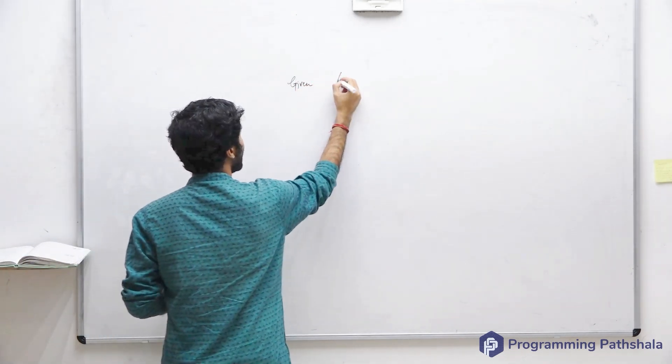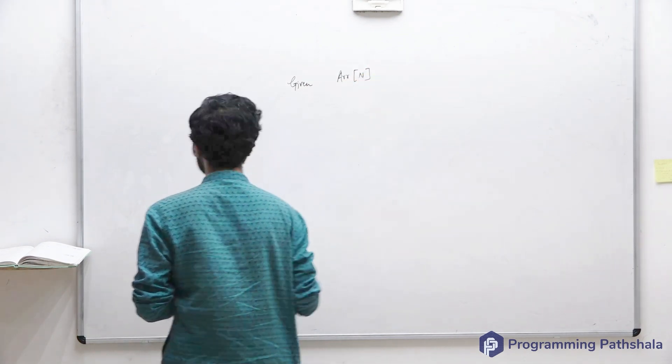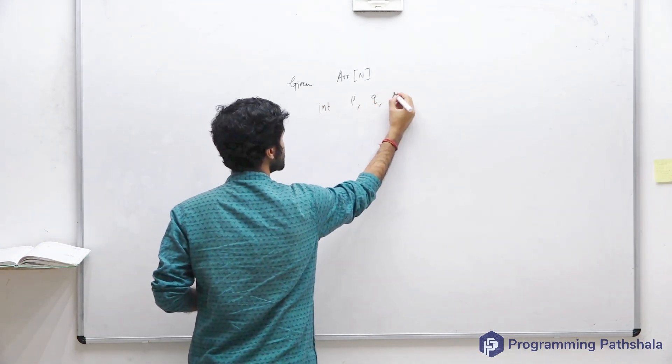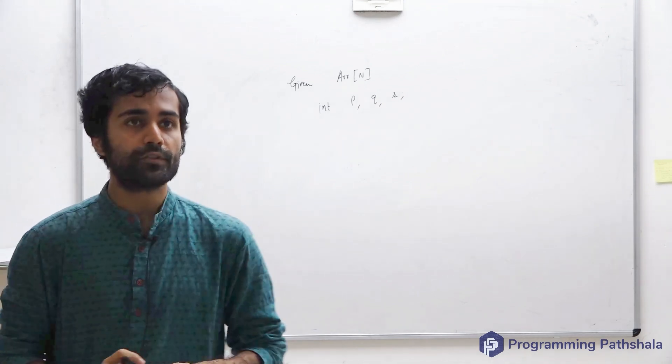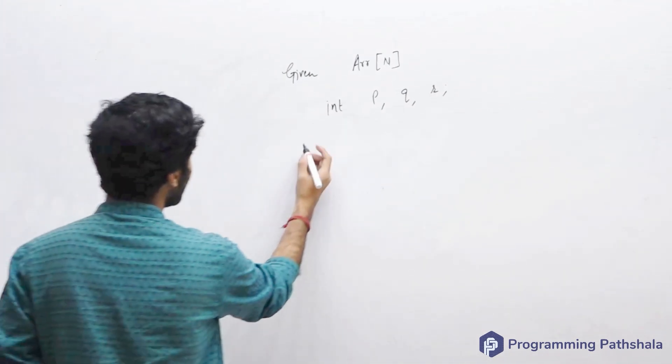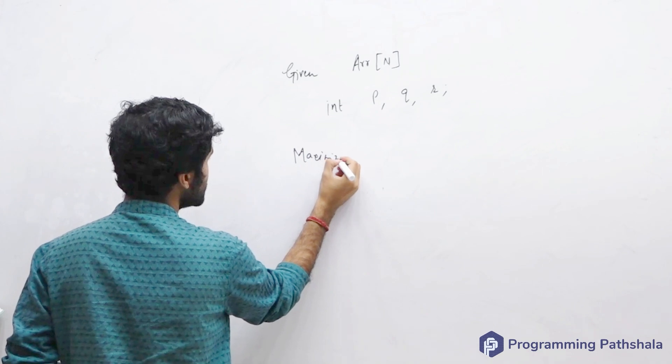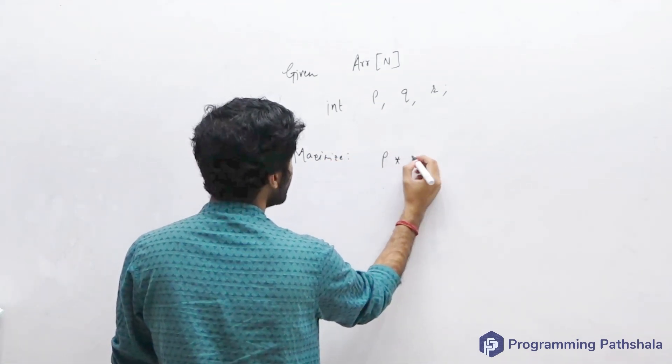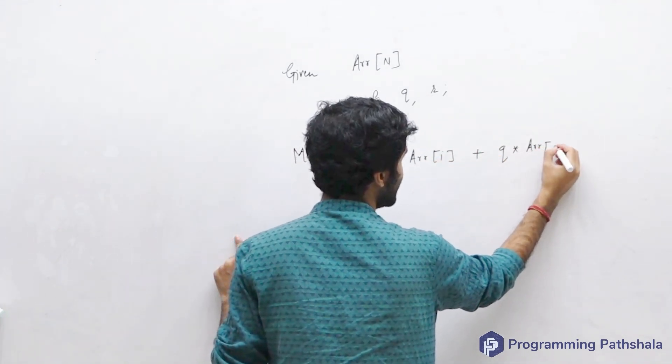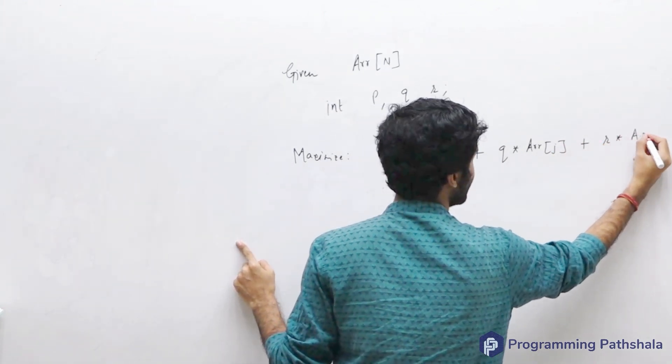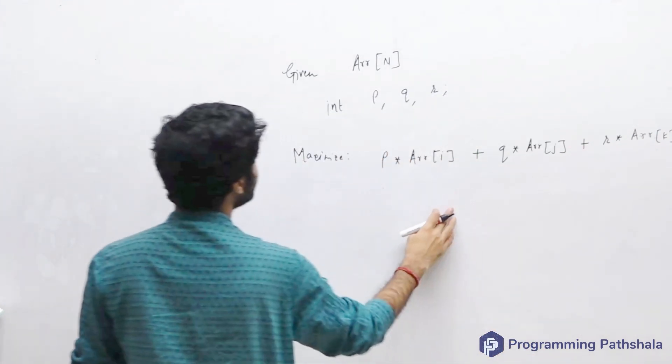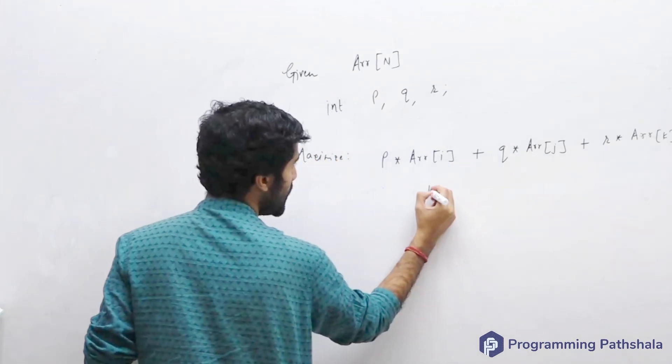You have been given an array containing n integers, and you have been given three more integers: p, q, and r. What you have to do is maximize the value of the following expression: p times arr[i] plus q times arr[j] plus r times arr[k], where arr[i], arr[j], and arr[k] are elements of my array and their indices obey this property: i is smaller than j and j is smaller than k.